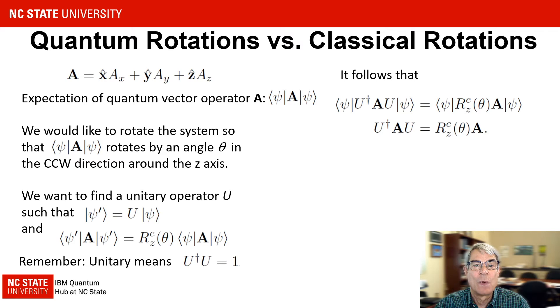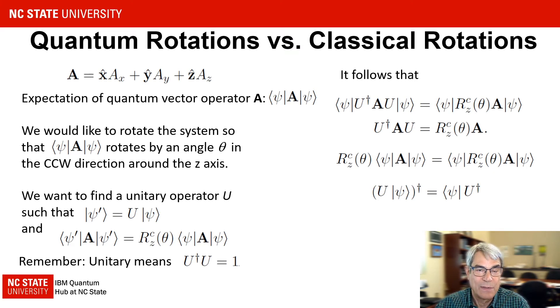Substituting U for psi prime leads to the conclusion that U dagger AU must give the same result as multiplying the vector operator by the classical rotation matrix. Here we have used the fact that the rotation matrix can be moved inside the bracket, which is easily verified by direct calculation. We have also used the fact that taking the conjugate transpose of a product is the same as taking the conjugate transpose of each factor and reversing the order.